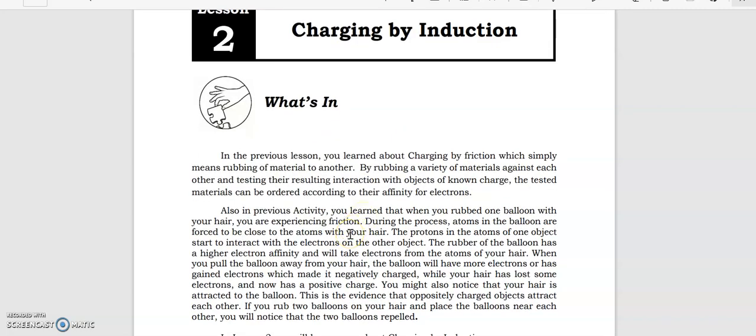In the previous lesson we discussed charging by friction. Simply that means rubbing of material to another, and we make use of the triboelectric series. We identify those materials that have greater attractiveness to the electrons or affinity for electrons. That means they can easily gain more electrons, and the other materials can easily lose electrons, becoming a positive charge.